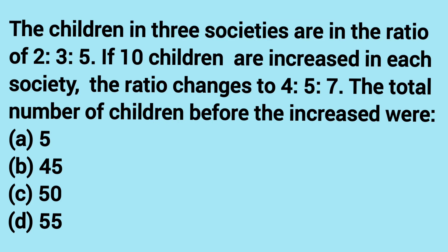The children in 3 societies are in the ratio of 2:3:5. If 10 children are increased in each society, the ratio changes to 4:5:7. Find the total number of children before the increase.